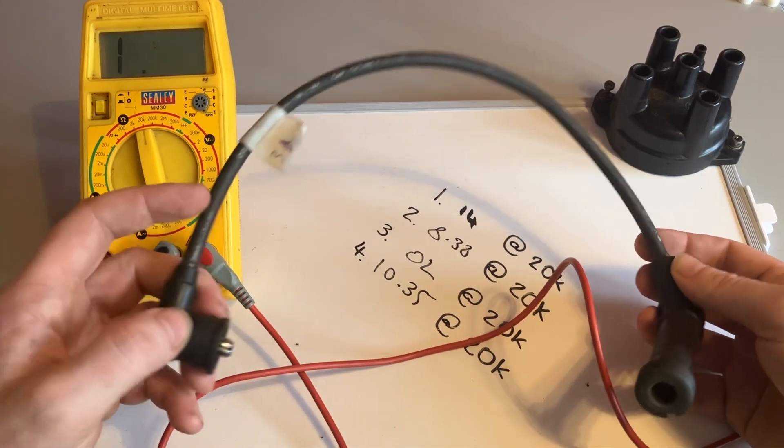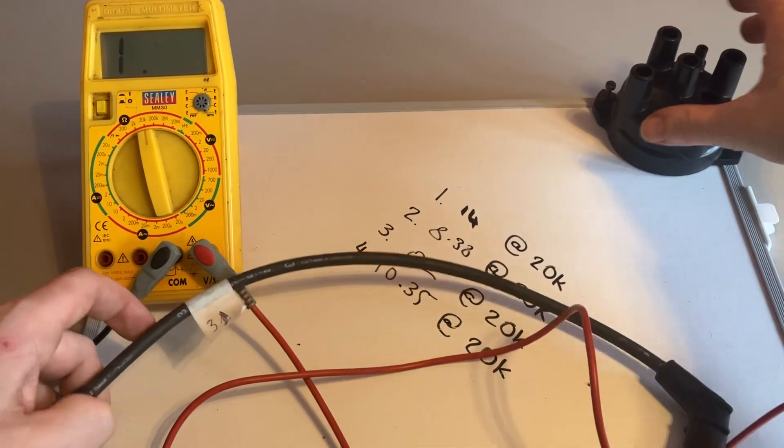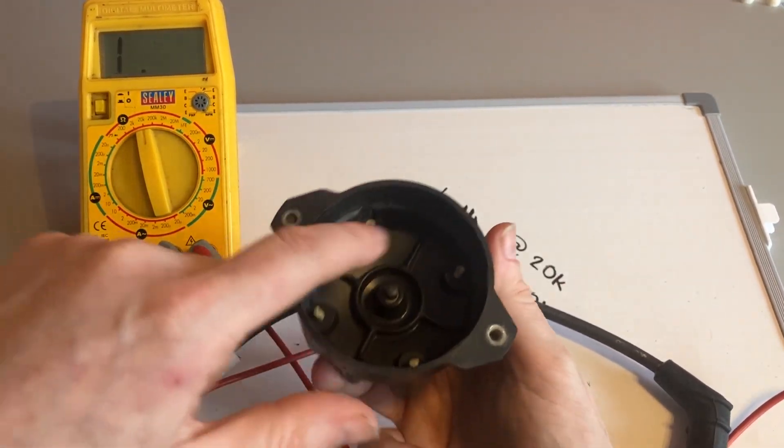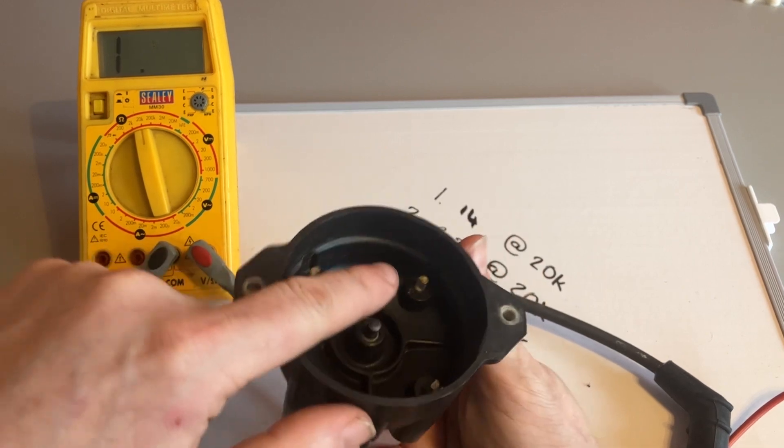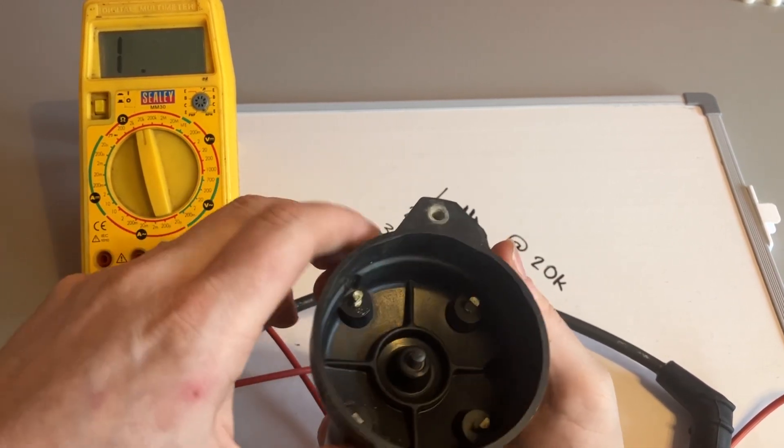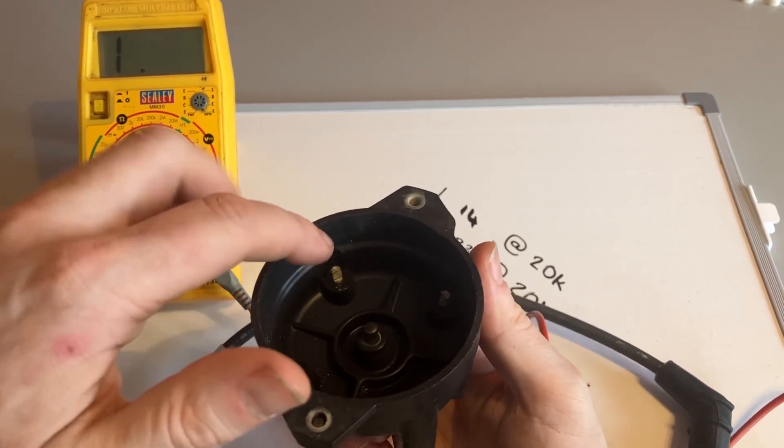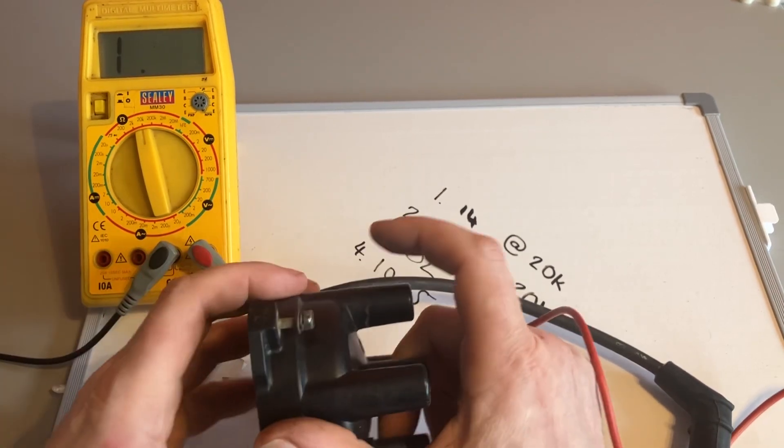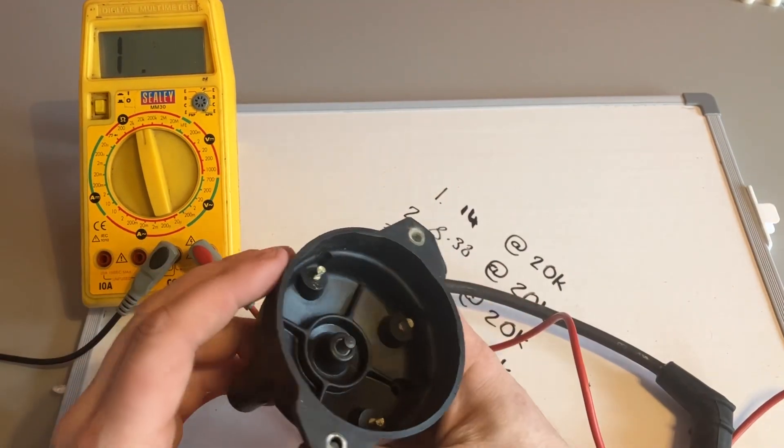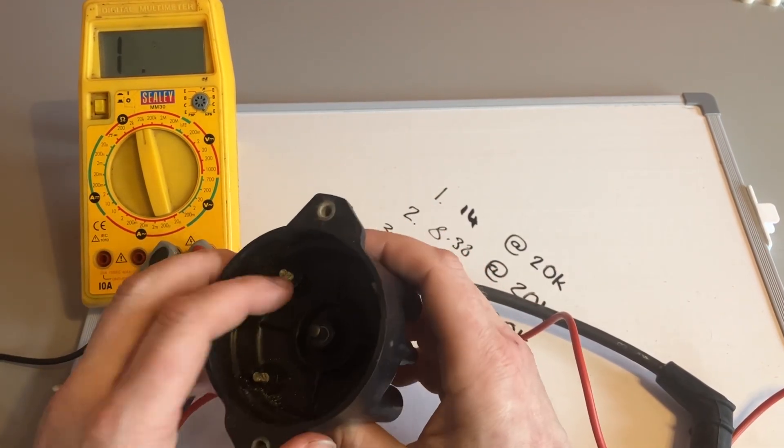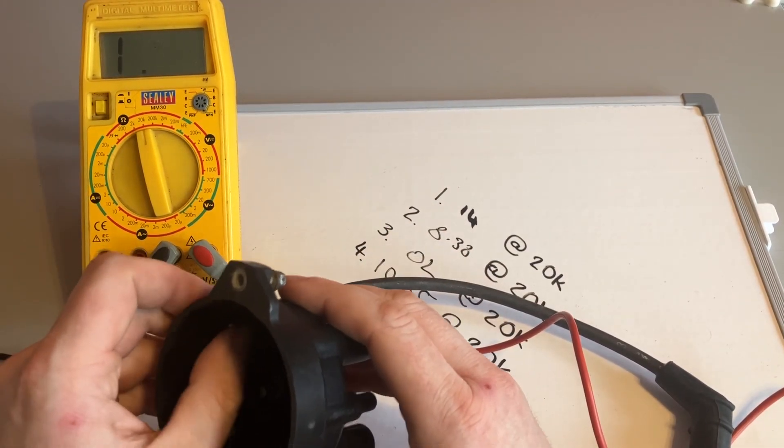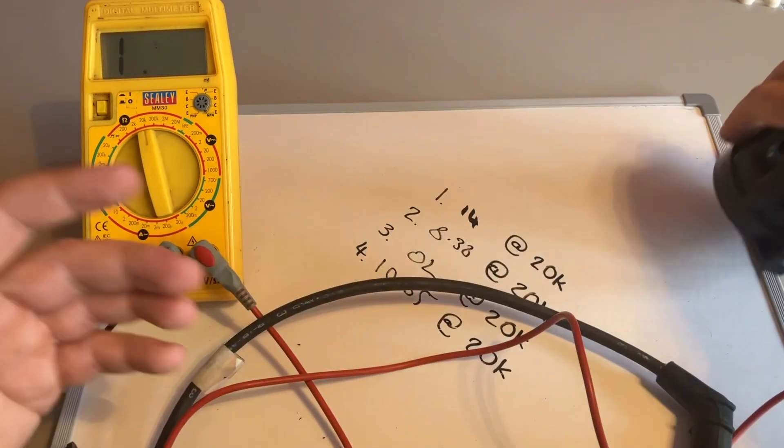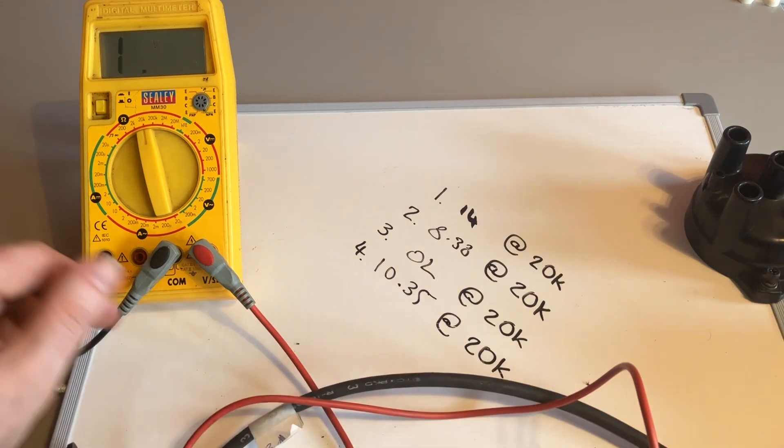So I will be ordering a new set of HT leads and distributor cap. Sometimes it's worth checking the distributor cap as well because these contacts, as the rotary arm spins around, hits these four contacts for each cylinder. These contacts do wear down over time and eventually it will lose connection and it won't be able to send the high voltage across to the corresponding port for the HT lead. In this case they're not too bad, a little bit of corrosion on that one. But as part of this packet will be coming with a new distributor cap and a new set of HT leads for this particular car.